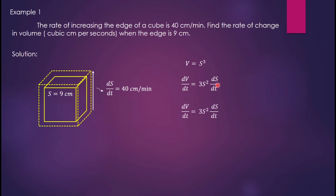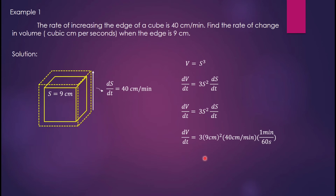Substituting: 3 times (9 centimeters) squared times 40 centimeters per minute, then converting 1 minute to 60 seconds, because the problem asks for cubic centimeters per second. The result is dV over dt equals 162 cubic centimeters per second. That is the final answer.